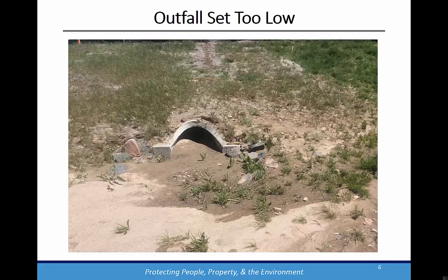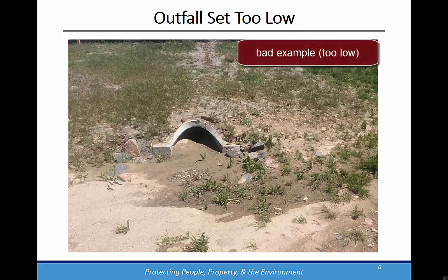In this photo, the outfall is set too low and too close to the receiving channel invert. The outfall is partially blocked by sediment accumulations, resulting in reduced pipe capacity. It is important to take into account the location of the outfall and the potential for sediment accumulations, such as occur within the inside radius of a curved channel. A good solution would be to raise the outfall invert elevation and recess the outfall further into the bank.